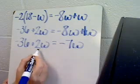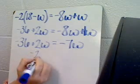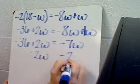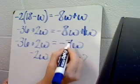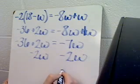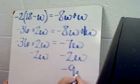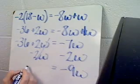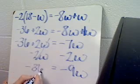Now I'm going to get my variables together. I'm going to subtract 2w from both sides. Negative 7w minus 2w would give you negative 9w, and on the other side of the equation you would have your negative 36.